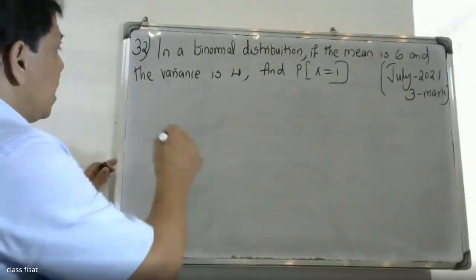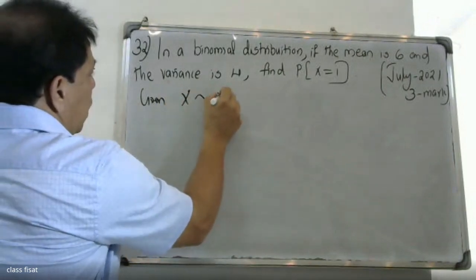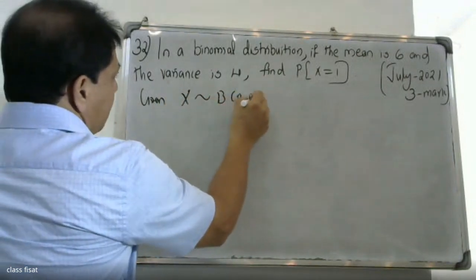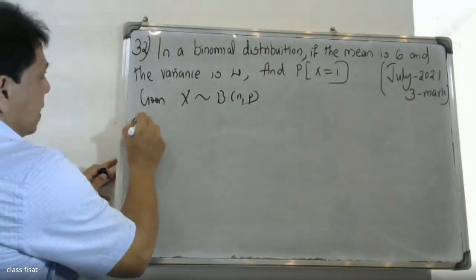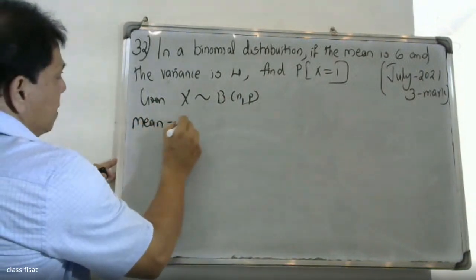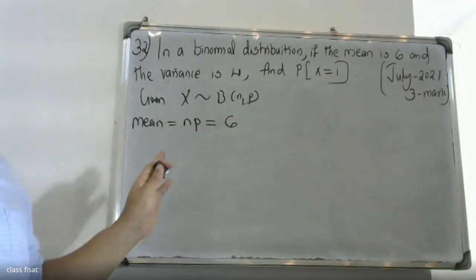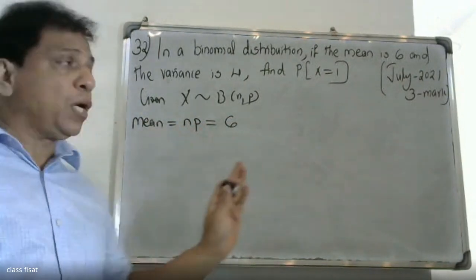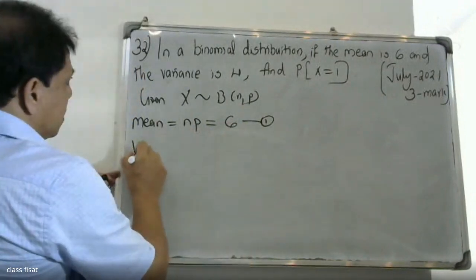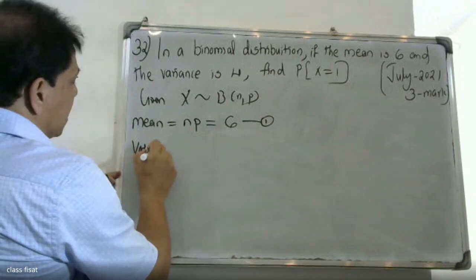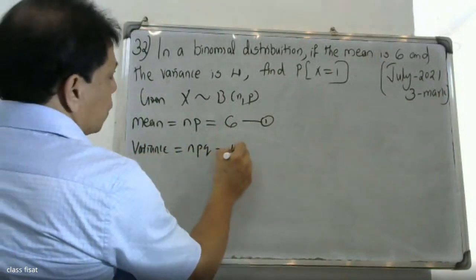Given X follows binomial distribution B(n,p), the mean is np = 6 (equation 1), and the variance is npq = 4 (equation 2).